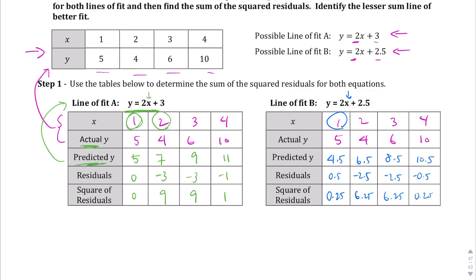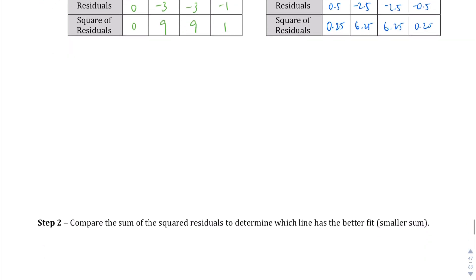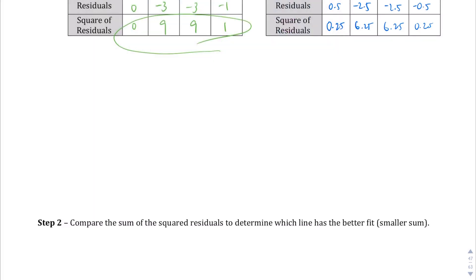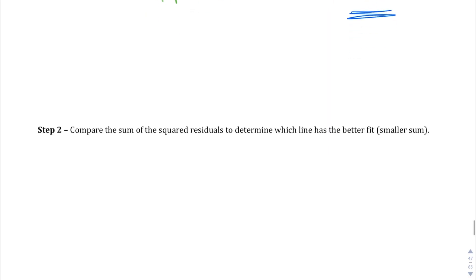Now we compare the sum of the squared residuals. Adding Line A's values: 0 plus 9 plus 9 plus 1 gives us 19. Adding Line B's values: 0.25 plus 6.25 plus 6.25 plus 0.25 equals 13. Since 13 is smaller, Line B is the better line of best fit.